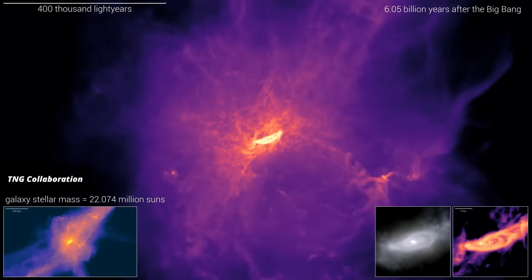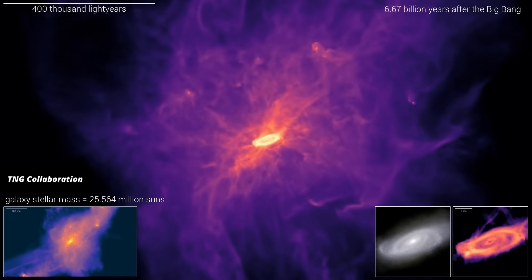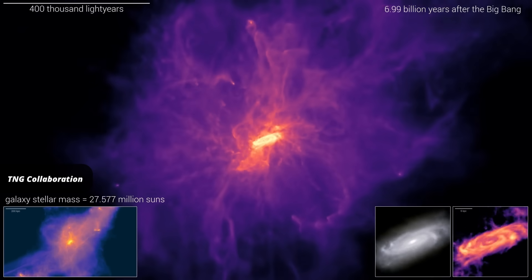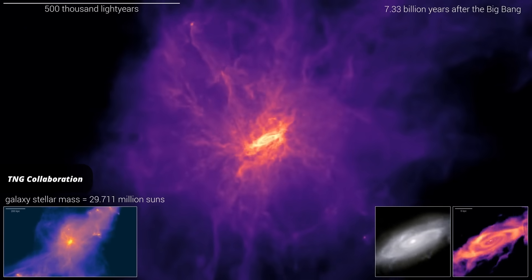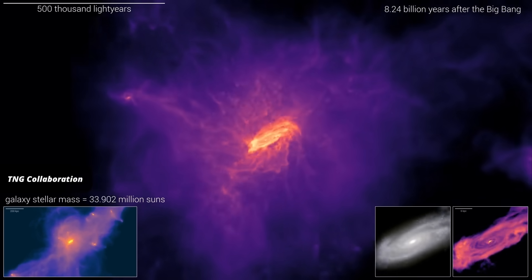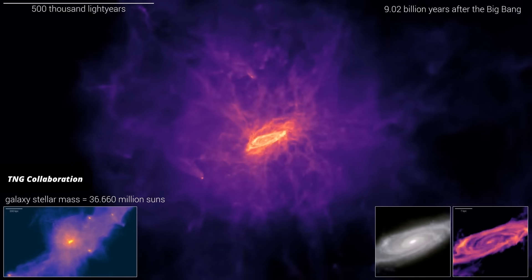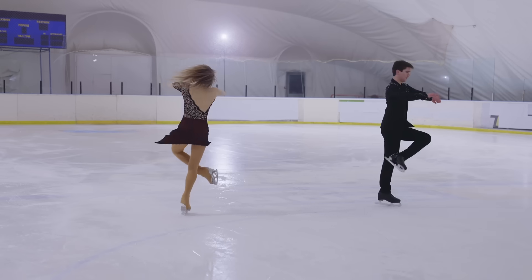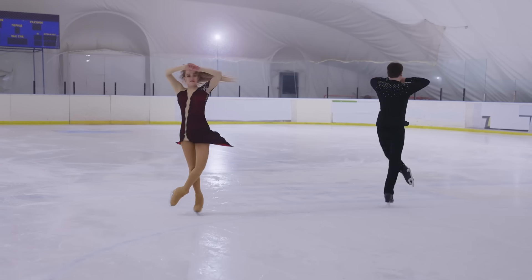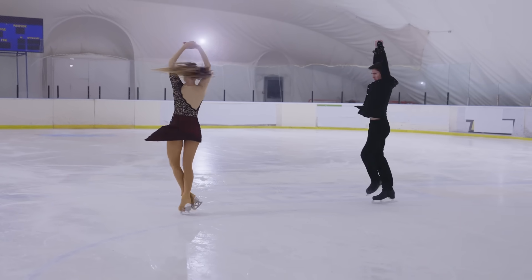You see, the reason that most galaxies spin is that they form from matter whose density increases because gravity pulls it together. And that matter isn't just sitting still, it's moving around. This makes it very unlikely it has no angular momentum. And angular momentum is conserved. And so, much like for a figure skater, if the matter gets denser, its rotation speeds up.